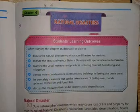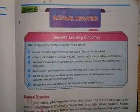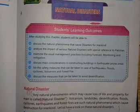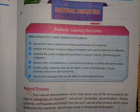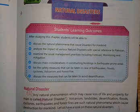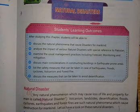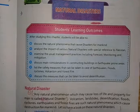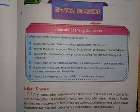So students, in our previous lecture we have learned about natural disasters like volcanism, landslide, desertification, and flood. Cyclone, earthquake, and forest fire are remaining and it's your home task. You have to read these natural disasters — earthquake and forest fire. Now we are going to attempt the exercise of this chapter.